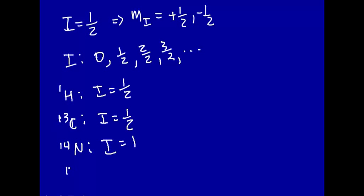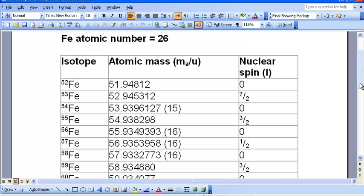Let's look at carbon-12. The nuclear spin of carbon-12 is zero. What does that mean? Well, there are no energy levels here to split, and therefore carbon-12 — you cannot do an NMR experiment on it because there's no nuclear spin.